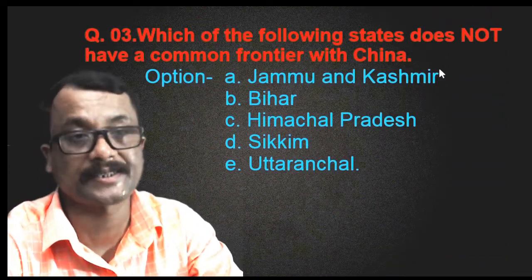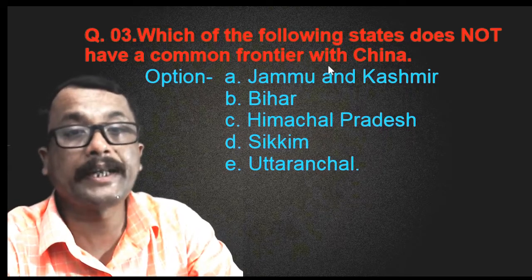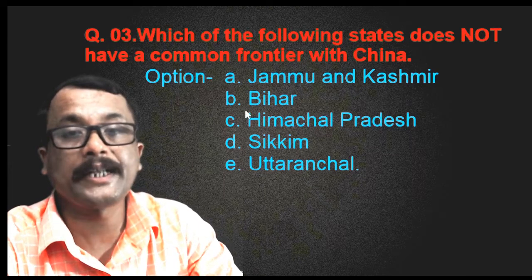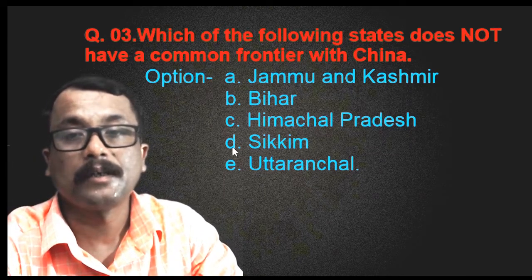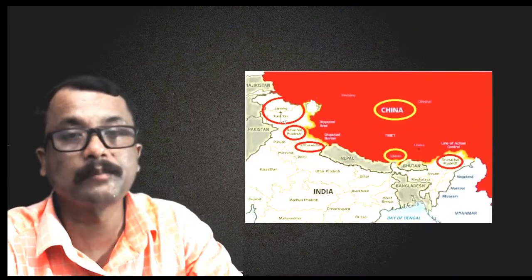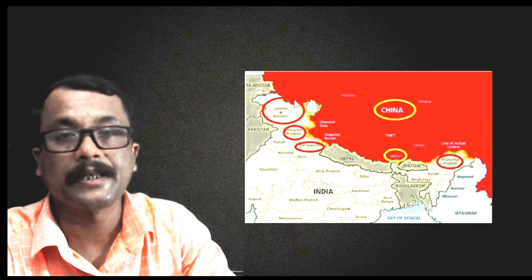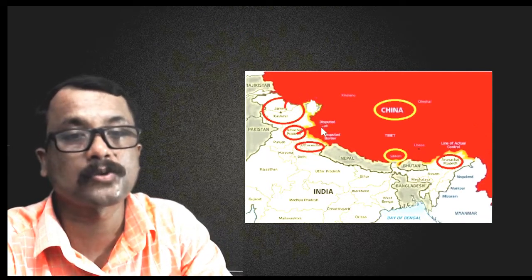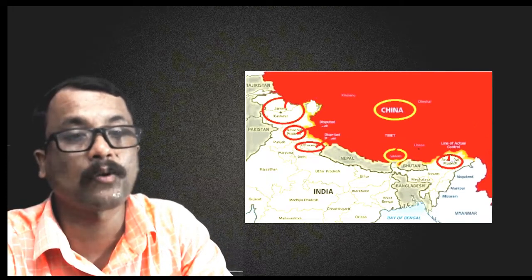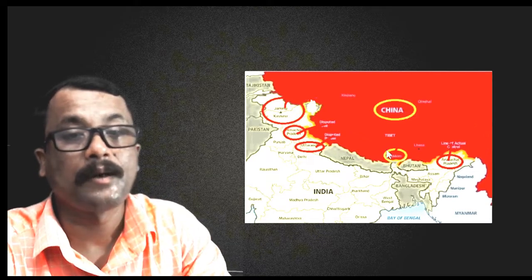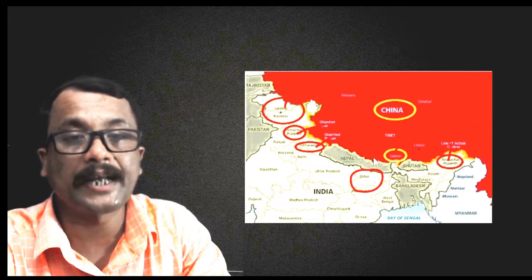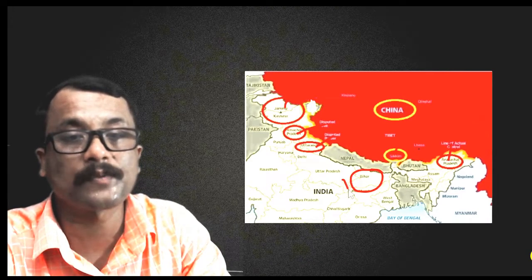Question number three: which of the following states does not have a common frontier with China? Option A: Jammu and Kashmir; Option B: Bihar; Option C: Himachal Pradesh; Option D: Sikkim; Option E: Uttaranchal. From the map: Jammu and Kashmir is attached to China, Himachal Pradesh is attached to China, Uttaranchal is attached to China, Sikkim is attached to China, Arunachal Pradesh is attached to China — but Bihar does not share a border with China. So the correct option is B.